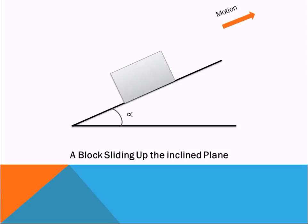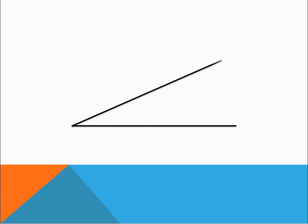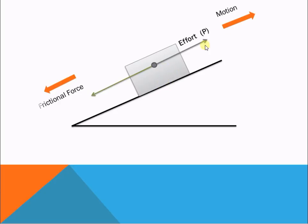We will try to understand the free body diagram of a block sliding up the inclined plane. As the motion is up the plane, suppose this effort is applied in this direction. The frictional force will act in the opposite direction, in the downward direction, and frictional force is given by F = μR.